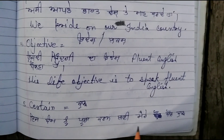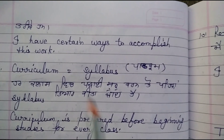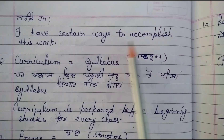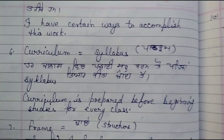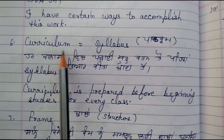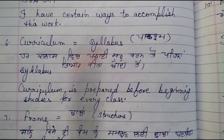The next one is 'certain' — kujh — means some. I have to accomplish this work and there are some ways to do it. I have certain ways to accomplish this work.